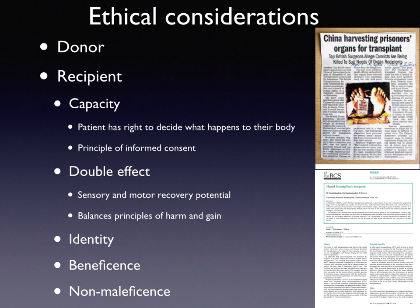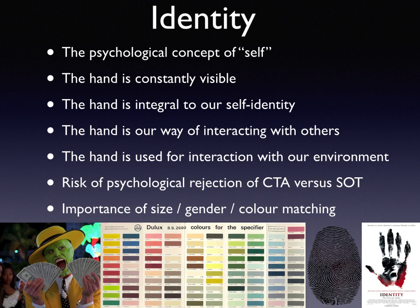For the recipient, one must consider their capacity and their right to decide what happens to their body. There is the benefit of sensory and motor recovery potential, but the effects of harm versus gain must be balanced. Important issues include recognition of self and patient identity — the hand is visible and integral to our self-identity and how we interact with others and our environment. There is a significant risk of physiological rejection, but also of psychological rejection in composite tissue allogeneic transplantation, as opposed to solid organ transplantation.